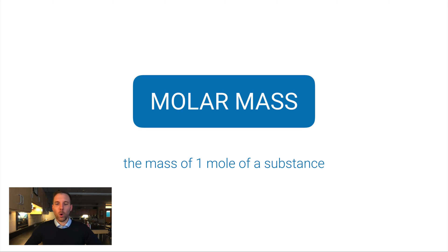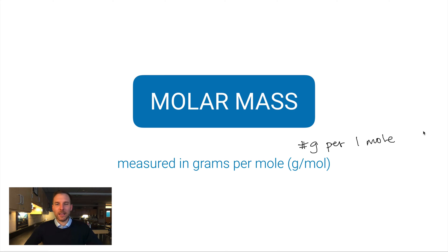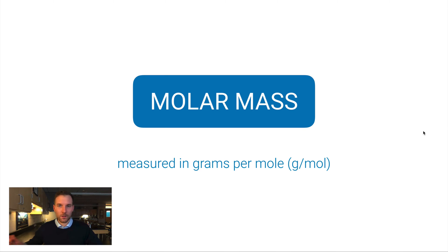Molar mass is the mass of one mole of a substance, and you measure it in grams per mole. G/mol means the number of grams per one mole — think about miles per hour for speed. If you're traveling at 40 miles per hour, that means 40 miles per one hour. Grams per mole is set up the same way: the number of grams per one mole of the substance.